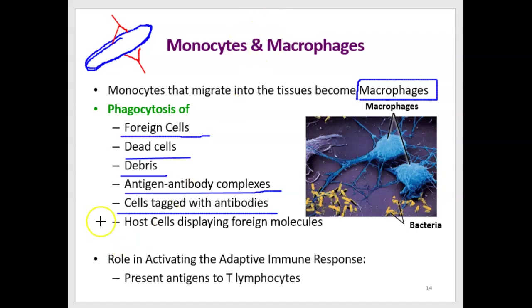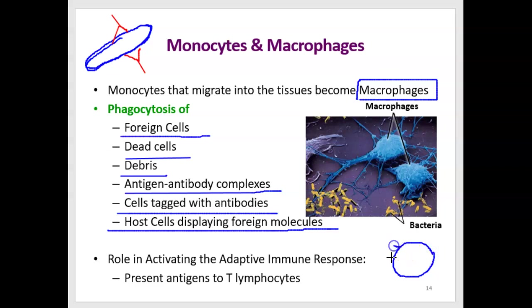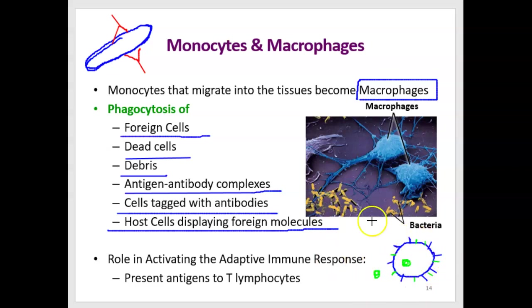In addition, macrophages can engulf any host cells that display foreign molecules on their surface. All of our cells have certain proteins on the surface, but if they've engulfed something pathogenic, the pathogen gets processed and parts of it are displayed on the cell surface. Certain macrophages can recognize that what's on the surface is not normal, and so the macrophage can tag it for destruction.